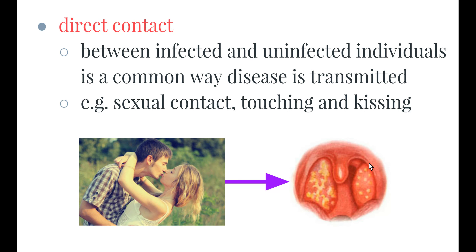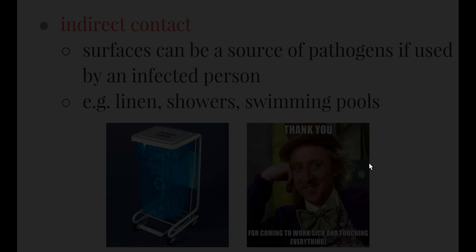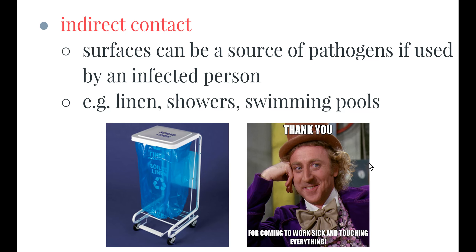Direct contact between infected and uninfected individuals is another common way disease is transmitted. For example, sexually transmitted infections are transmitted through sexual contact. Some diseases can also be transferred through basic touching or kissing — glandular fever and mumps can be passed on through the direct contact of kissing, as the transfer of saliva from one mouth to another carries pathogens with it.